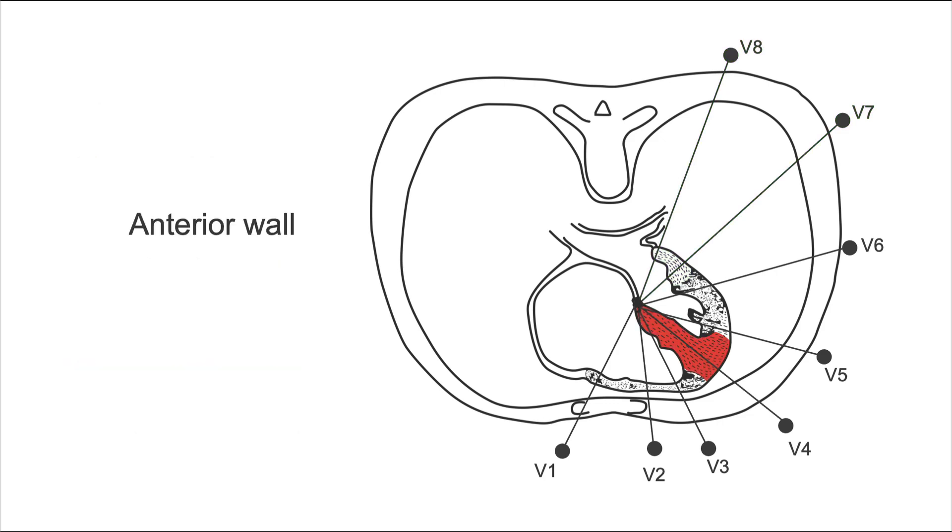And what if you see changes in V4, the anterior wall, but also in V5 and V6, the lateral wall? Well, actually changes that are seen in the anterior wall and the lateral wall are called anterolateral. And changes that are seen in the lateral wall and the posterior wall are called posterolateral.